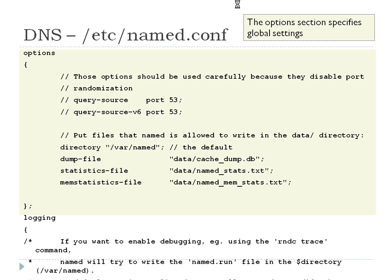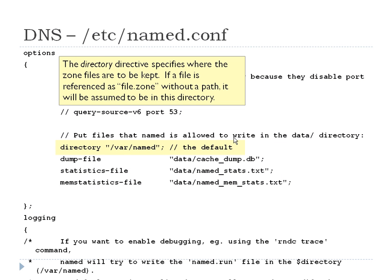Your options section contains options that are for the entire thing — the ports you're going to use, statistics, different things to measure with. The most important one is the 'directory /var/named' statement. That specifies where the zone files are held. It also says if you just put a name without any kind of path, it's going to assume it's in '/var/named'. So a bare filename would be found at '/var/named/data/filename'. If something starts with a slash, that's an absolute path and that rule wouldn't apply.